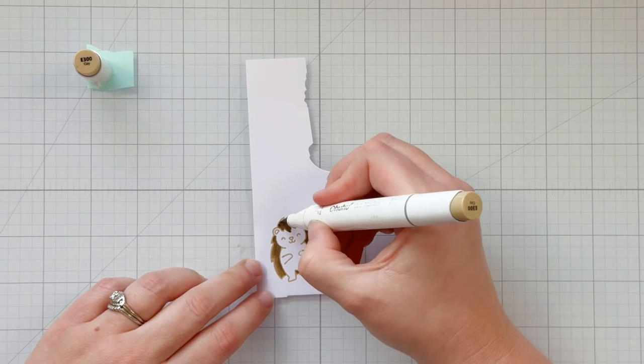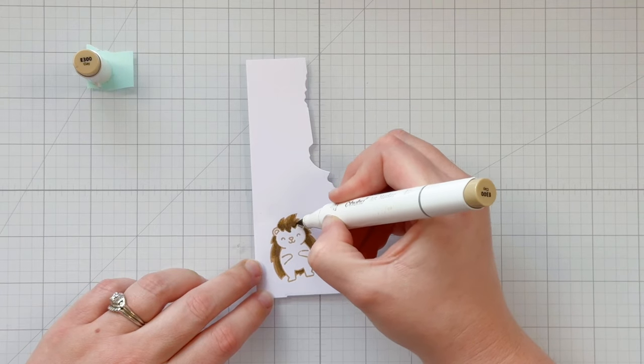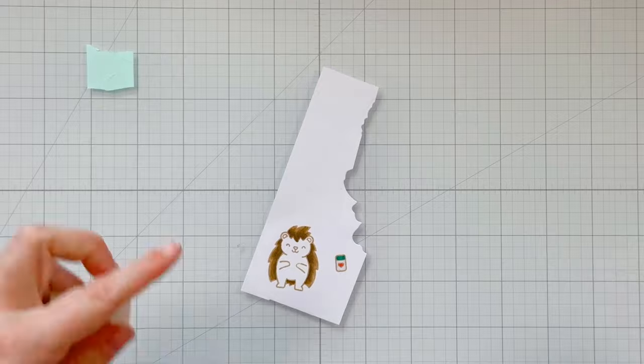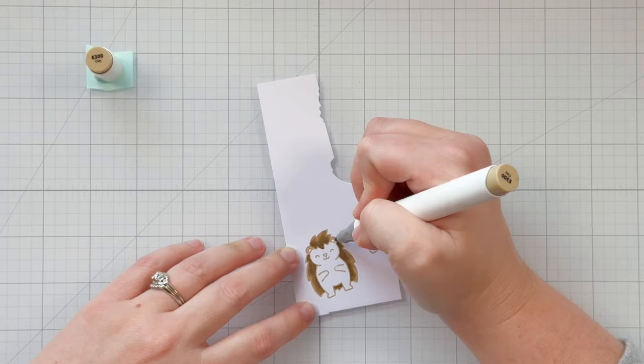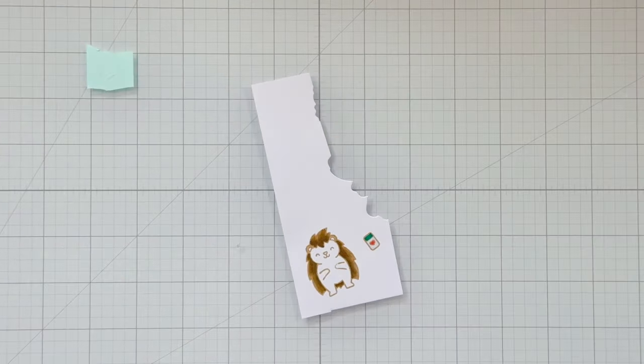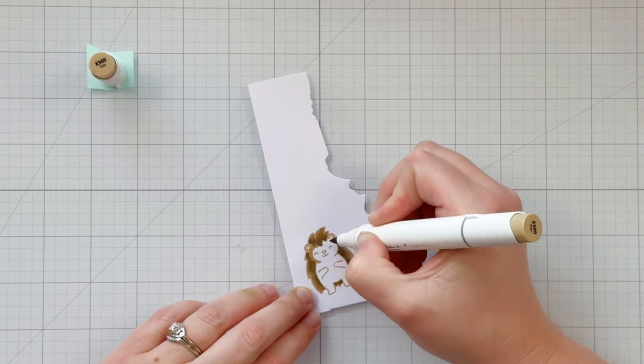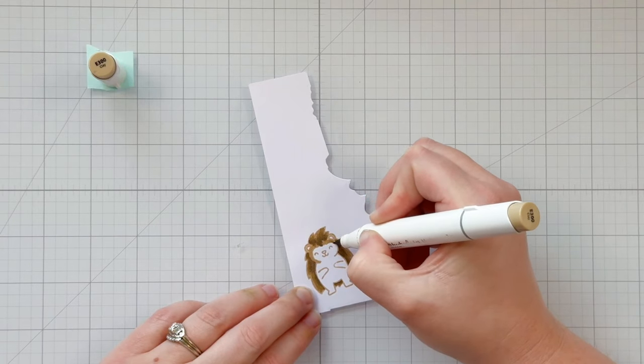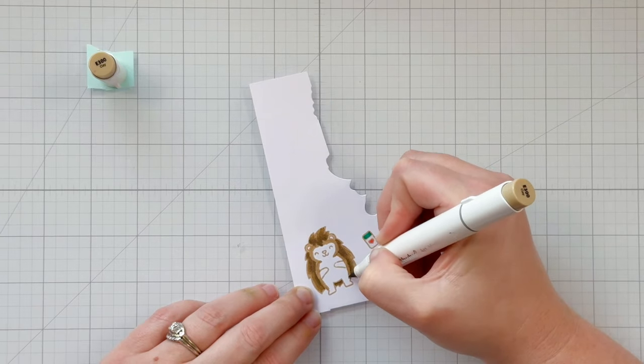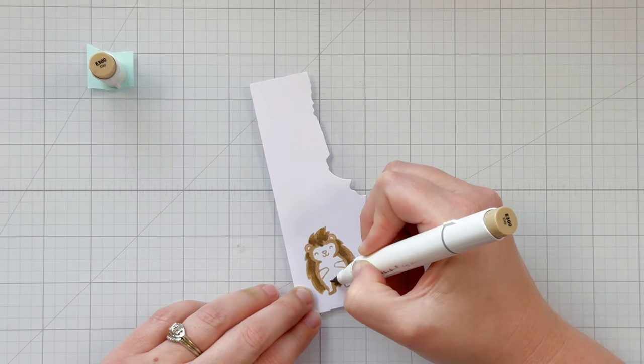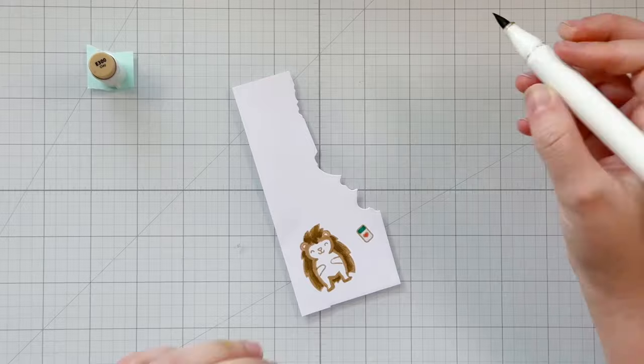Of course you can always use whatever you have on hand to recreate this card. I am using Lawn Fawn products and I will have everything linked down below. For the rest of my porcupine I'm using that E300 again. This time it will be the darker color and I'm just outlining and following the shape of the porcupine, adding the darkest color where I think the shadows would look best.